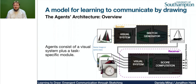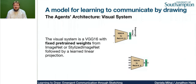Looking at the overall architecture of the agents, they have some things in common and some different components. There is a visual system common to both agents, and a task-specific module different for each. For the sender, there's a visual system and a sketch generator; for the receiver, a visual system and a score computation module. The visual systems are based on the VGG16 network — we take all the convolutional layers, discard the MLP at the end, and use pre-trained weights from ImageNet and, for some experiments, stylized ImageNet. During training, these weights are fixed, and both agents are followed by a linear projection giving a feature vector to represent each image.